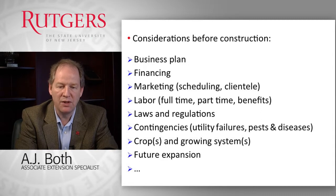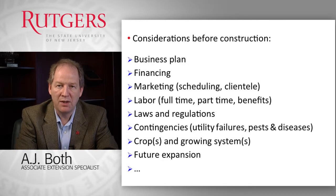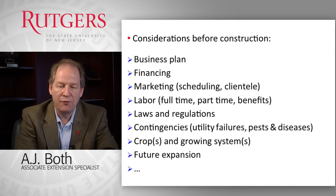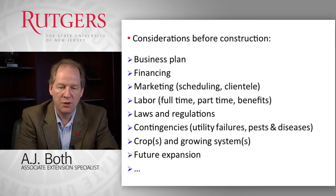You need to have plans for contingencies — what are you going to do when there is utility failure, when the power is out for an extended period of time? What kind of pest and disease management strategies are you going to follow when you do get pests and diseases in your operation? You may also want to think about future expansion. Many businesses start small and once they get successful they want to expand, and if you have already thought about expansion and worked it into your plan it becomes much easier and less expensive to expand.